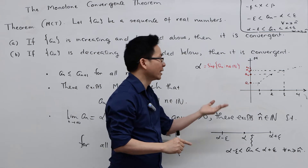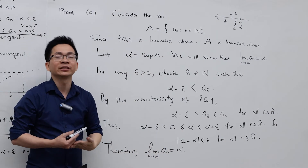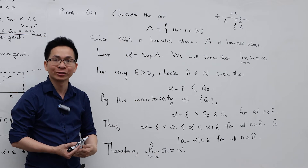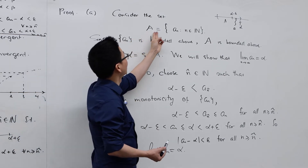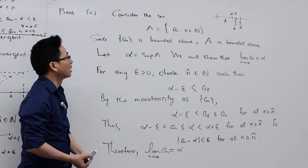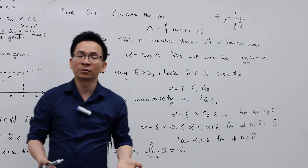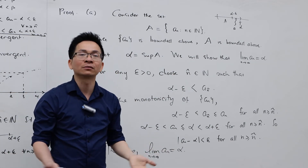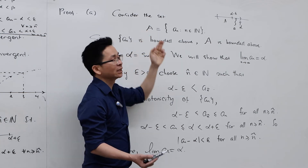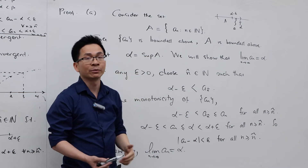The idea is to let α be the supremum of the set A = {aₙ : n ∈ ℕ}, and then use the definition of convergence to show that aₙ converges to α. This is the formal proof. For simplicity, we consider only the case where aₙ is monotone increasing. Define A = {aₙ : n ∈ ℕ}. Since aₙ is bounded above, A is bounded above. A is also non-empty since a₁ ∈ A. By the completeness axiom, since A is non-empty and bounded above, the supremum of A exists as a real number. Let α = sup(A).